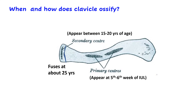Regarding ossification of the clavicle: there are two primary centers appearing in the shaft during the fifth to sixth week of intrauterine life, making it the first bone to begin ossification. There is only one secondary center, for the medial end, which ossifies in cartilage while the rest has membranous ossification. This secondary center appears between 15 to 20 years and fuses with the rest of the bone by 25 years, making it the last bone to complete ossification.